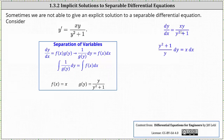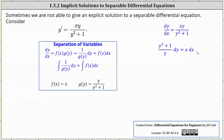To begin, we replace y prime with dy/dx. And because g of y is a rational function, we'll multiply both sides of the equation by the reciprocal of the rational function, which is the quantity y squared plus one divided by y, and then write the differential equation in differential form — which can be viewed as simply multiplying both sides by dx. This gives us the quantity y squared plus one divided by y, dy equals x dx.